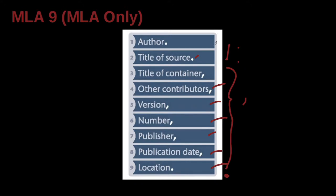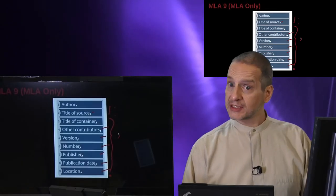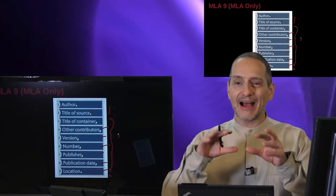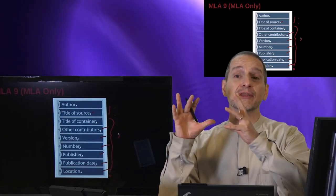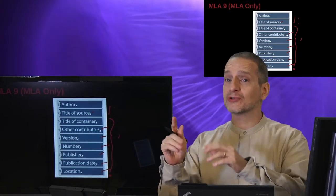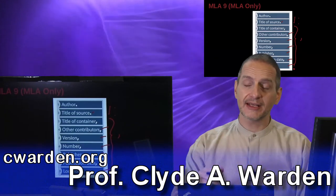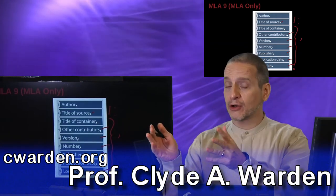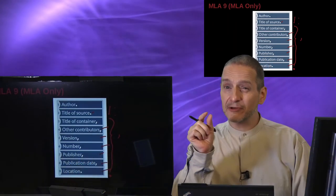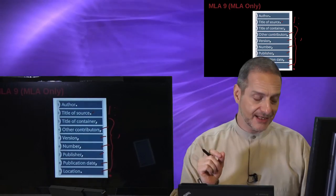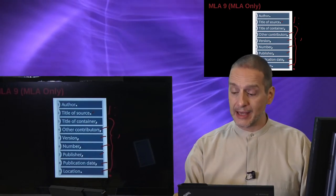So you begin with chunks of information separated by periods, and then from the container onward everything is separated by commas. The MLA is always emphasizing: what is the container? How can I find it? How can I find the book that has the chapter you're citing, the journal that has the article, or the film that has the dialogue you're citing? That is the MLA's emphasis.